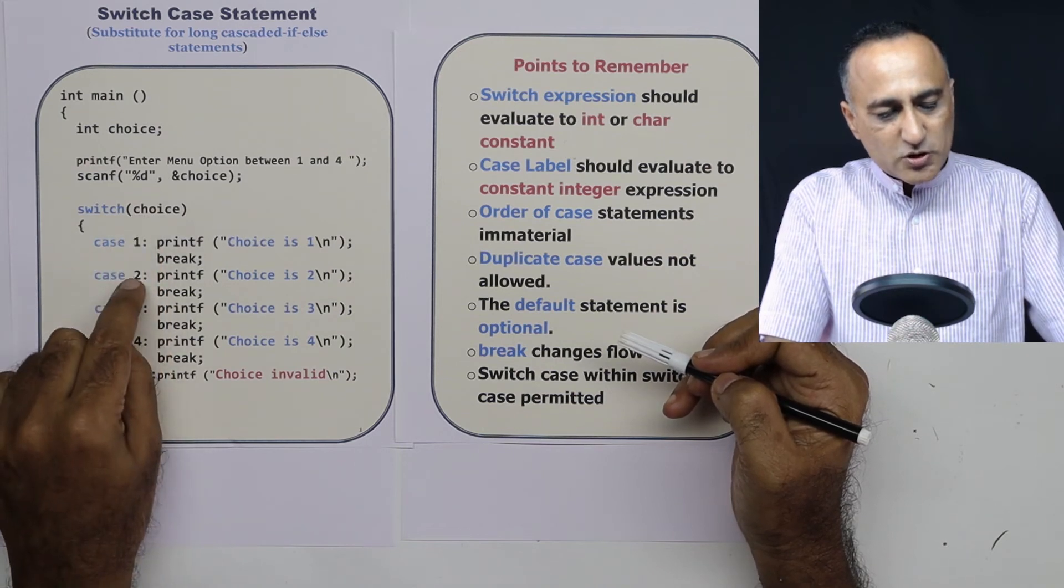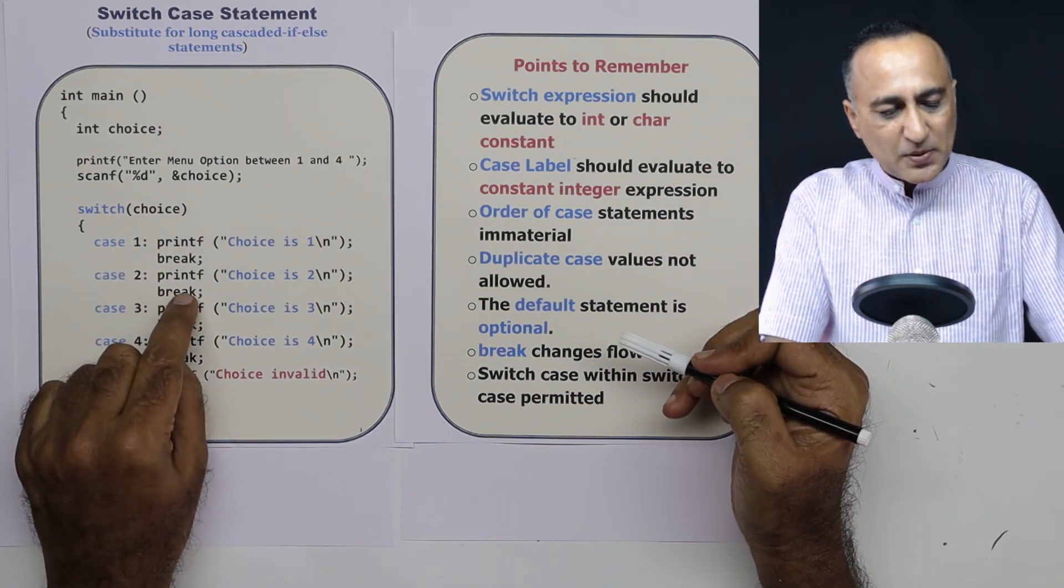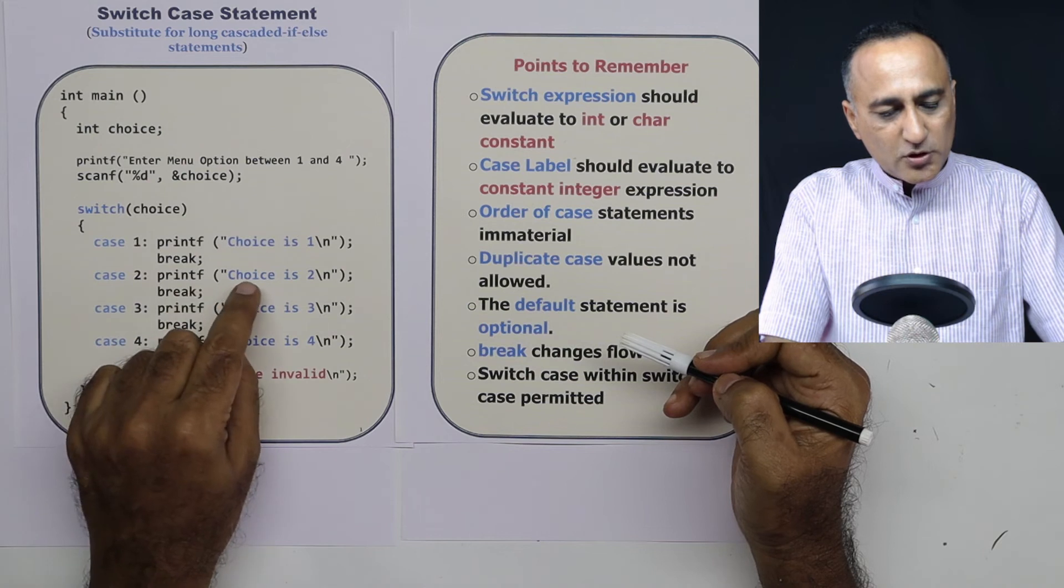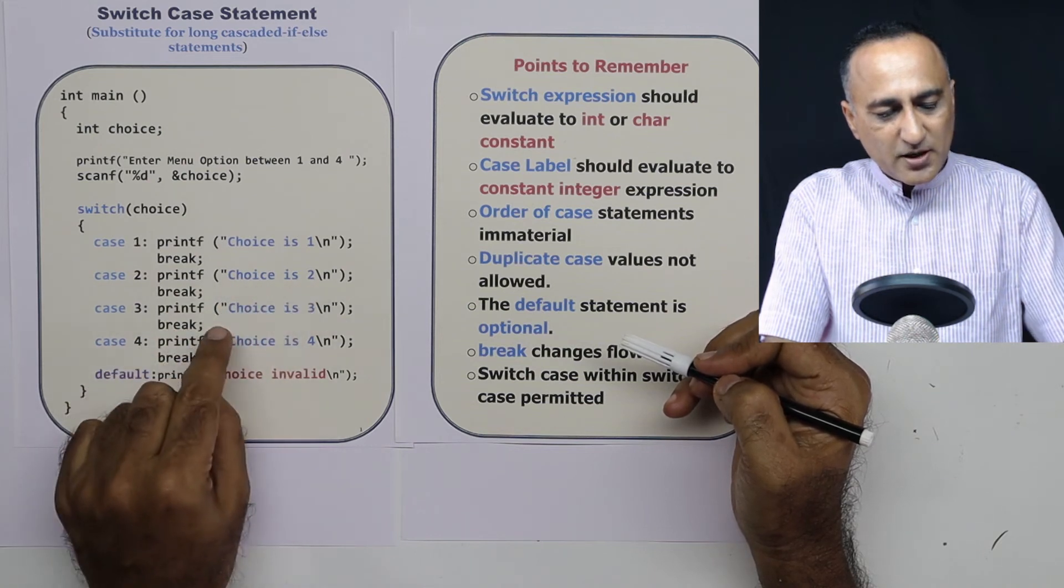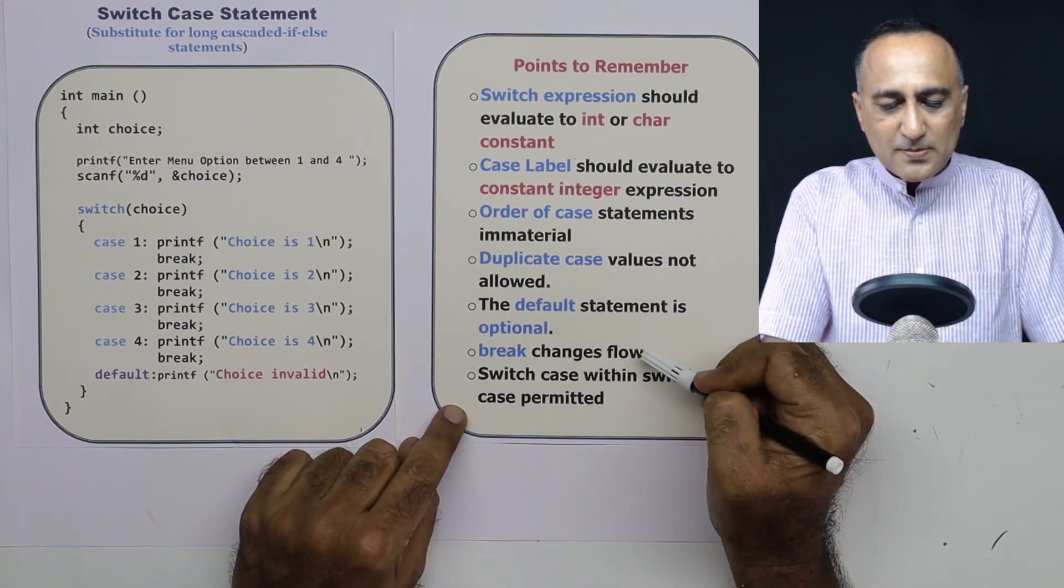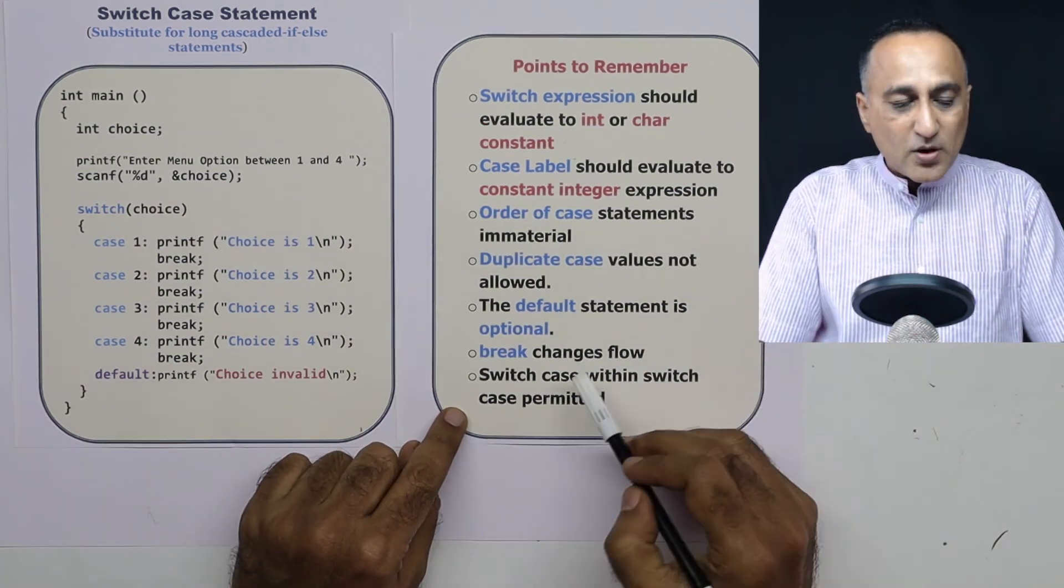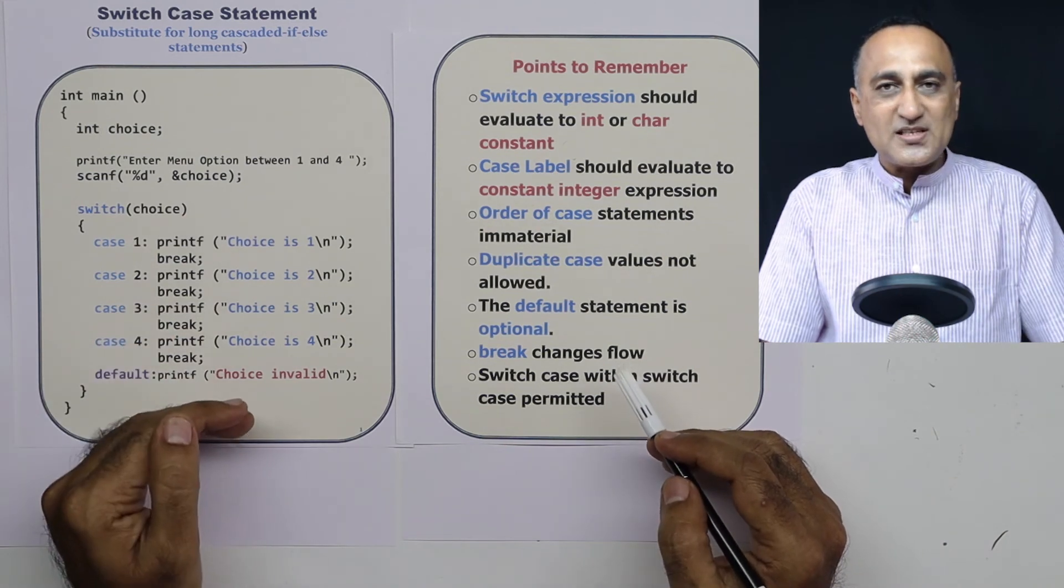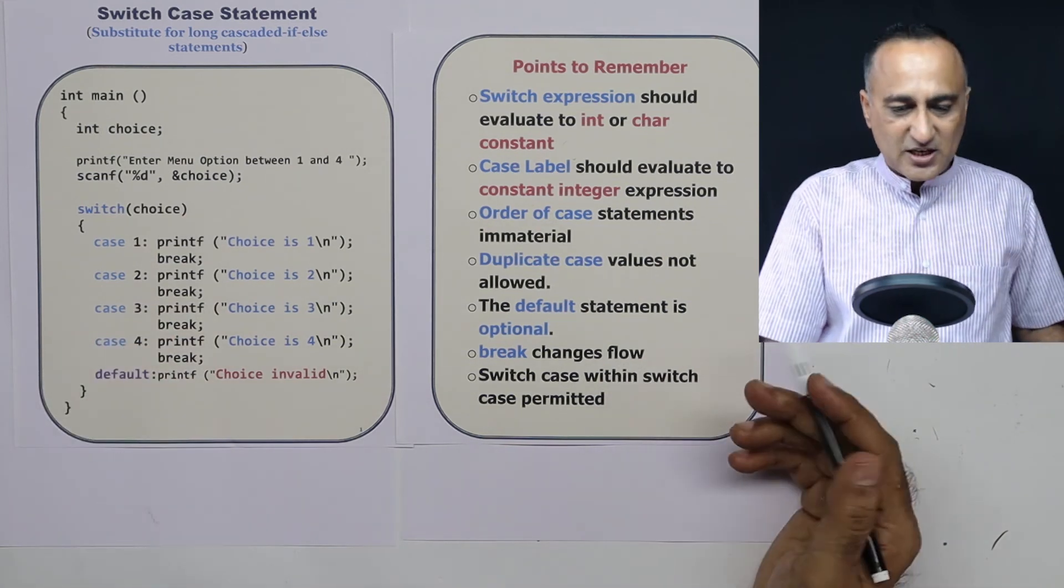Suppose the choice was 2 and I had forgotten to put this break. After 2, 'choice is 2' message being printed, it will also print the message 'choice is 3', and then it would break. Now break simply changes the flow. You can have any number of switch cases within a switch case statement.